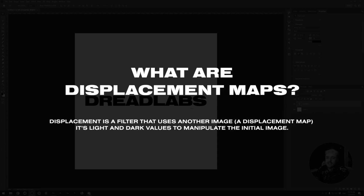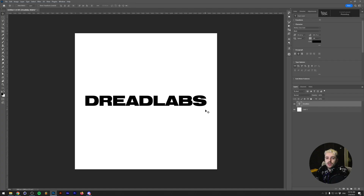Displacement maps are basically a filter in Photoshop and After Effects, and probably a lot of other software, where you can displace certain aspects of your image based on light and dark values of another image. A good way to explain what this does is to show you a real life example.